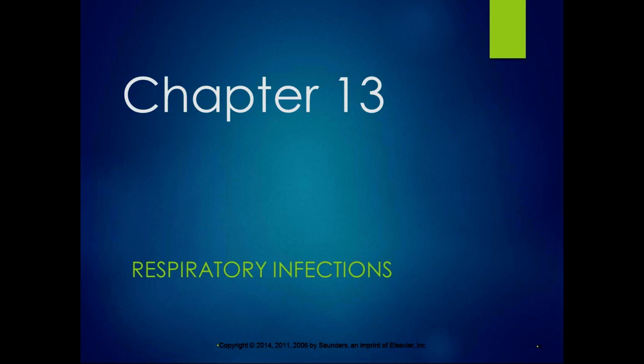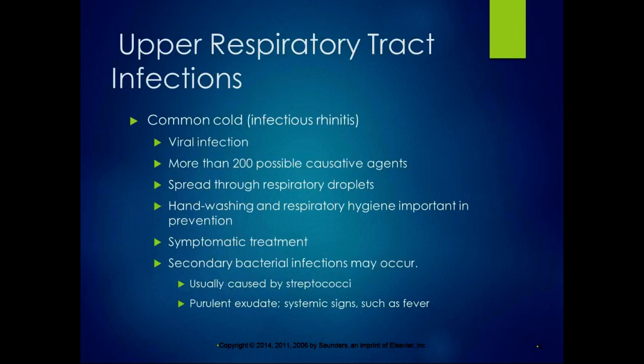This section of the chapter will be about respiratory infections. We talked about some of these in the infection chapter last quarter, so I'm not going to go through every single one, but I'll hit the high points. Upper respiratory infections — we're all commonly familiar with the common cold, also known as infectious rhinitis. It's a viral infection with more than 200 causative agents, and it's spread through respiratory droplets.